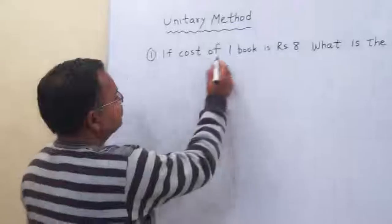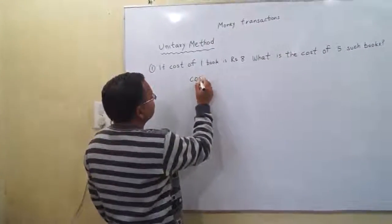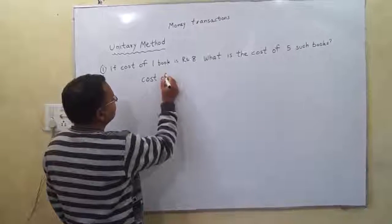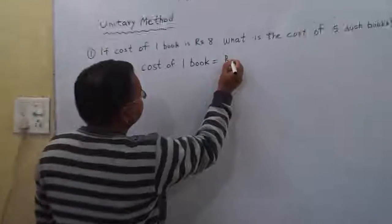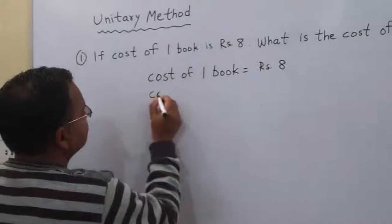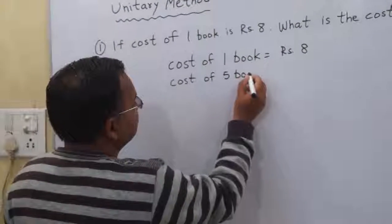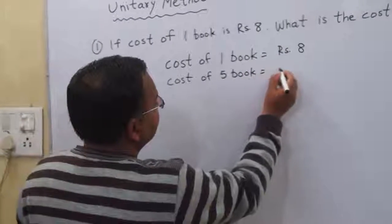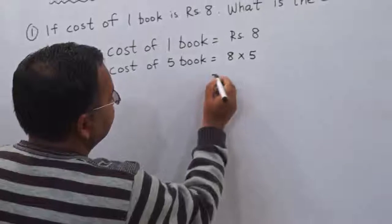If the cost of one book is Rs. 8, what is the cost of five such books? Cost of one book is equal to Rs. 8. Cost of five books is equal to 8 multiplied by 5, that is Rs. 40.